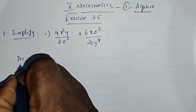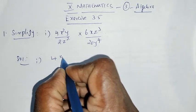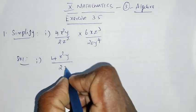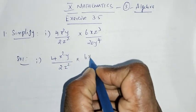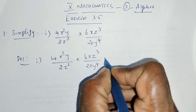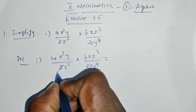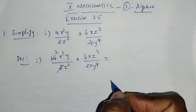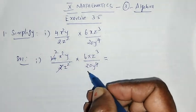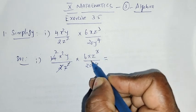Solution. First one, 4x²y divided by 2z² into 6xz³ divided by 20y to the power 4. Now this will cancel. Equal to 1, 2s are 2, 2s are 4. Again, x² is here, z². This will be balanced.